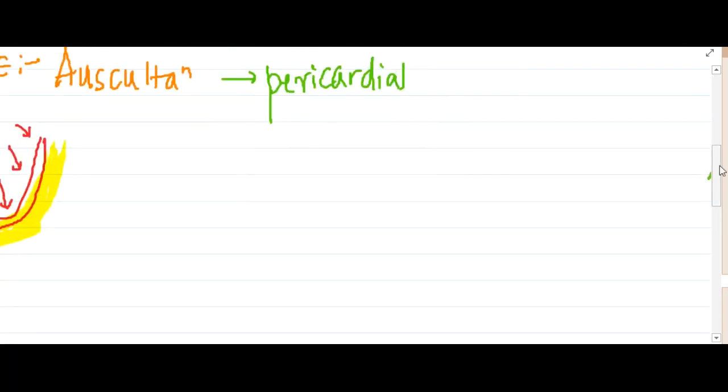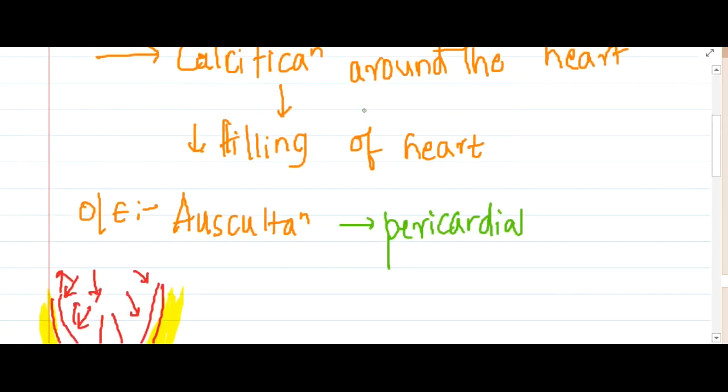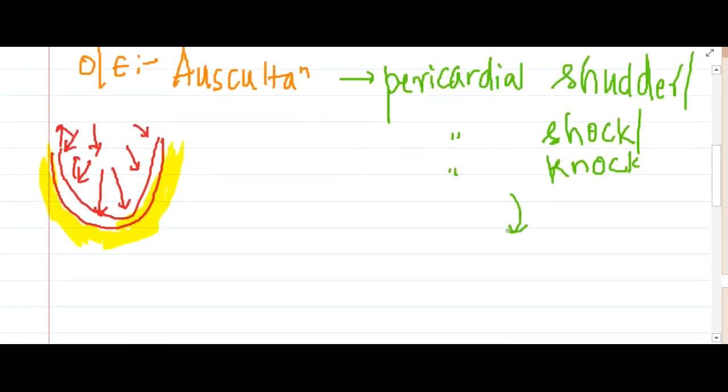This is seen as pericardial shudder or we call it also with one more name which is called pericardial shock or we can also call it pericardial knock. Where does this pericardial shudder or shock or knock occur? It occurs after the opening snap, and this pericardial shudder is a high-pitched sound.